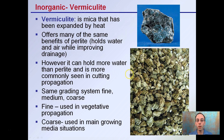There's also something called vermiculite, and it looks like this. It's mica that has been expanded by heat. It offers many of the same benefits as perlite, such as holding water and air while also improving drainage. However, it can hold more water than perlite, and it's more commonly seen in cutting and propagation mixes. It has the same grading system — fine, medium, and coarse — with fine being used for propagation and coarse for main growing situations.